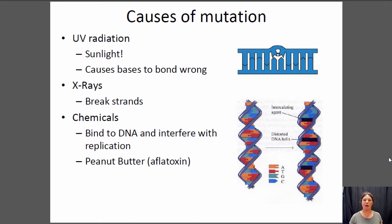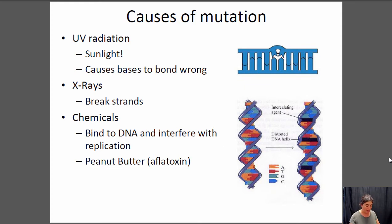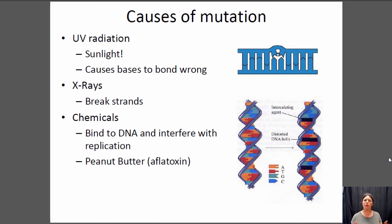Another really common cause of mutation is x-rays. Modern doctors have ways to minimize x-ray exposure, but in the past they didn't know x-rays were bad. You could go to the shoe store, stand on a little box, put your feet under it, and it would shine x-rays through your feet so you could see the bones on a screen. Of course, you're also shining x-rays through your entire body. X-rays contain so much energy they can actually break your DNA strands, which is very bad. There are also a number of carcinogenic or mutagenic chemicals — anything that binds to DNA is generally bad because the enzymes that replicate your DNA can make mistakes, increasing the mutation rate.